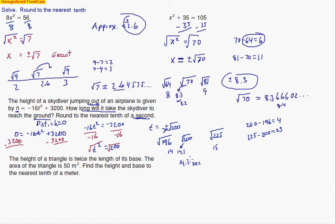Do you care if it's 0.1 or 0.2 seconds off? It's pretty close — 14 seconds tells you about when that skydiver is going to be on the ground, and 14.1 is a little more precise. So 14.1 seconds is what I'm going with. Let's plug into the calculator — square root of 200 is 14.1421 and then continues. So we were right around the right time.